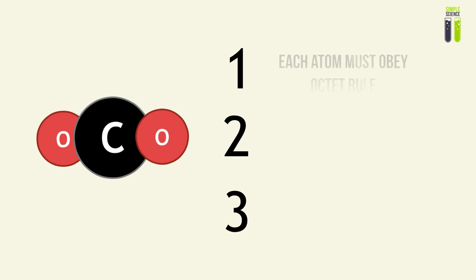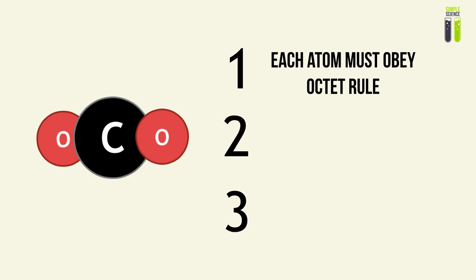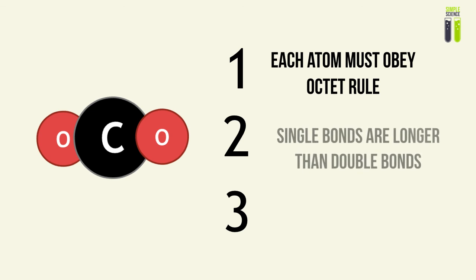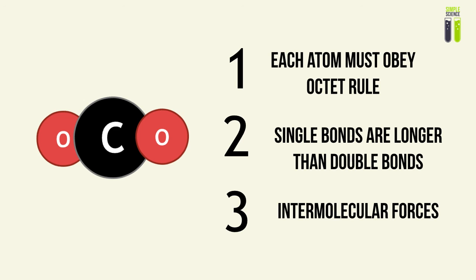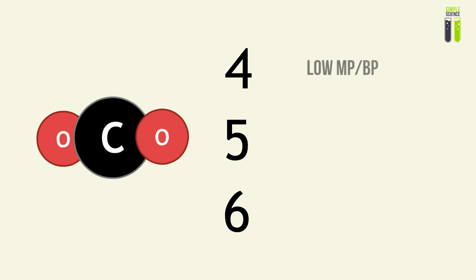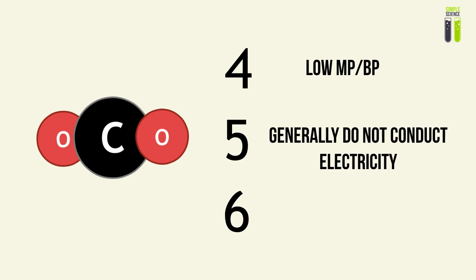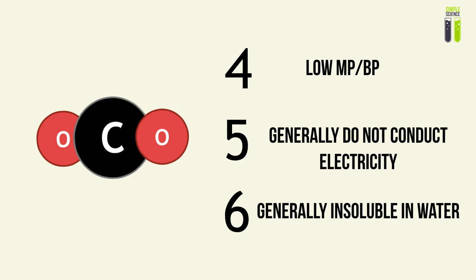Let's go over this very quickly. Each atom must obey the octet rule, just as we talked about for compounds made up of single elements. Single bonds are significantly longer than double bonds because they are weaker. There are intermolecular forces that exist between the molecules of covalent compounds — different from the covalent bonding that takes place within the molecules. Key properties include low melting point and low boiling point. They generally do not conduct electricity because they have no overall charge, and they are generally insoluble in water because they are nonpolar.